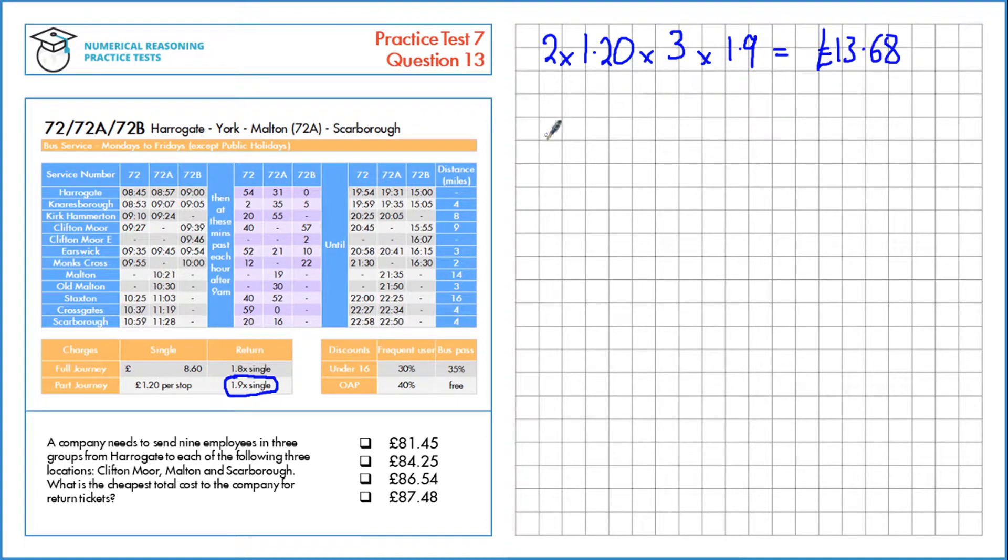Now let's do the Moulton journey. To get to Moulton, there's only one bus that goes to Moulton, and that's the 72A. At £1.20 per stop, we've got one, two, three, four stops.